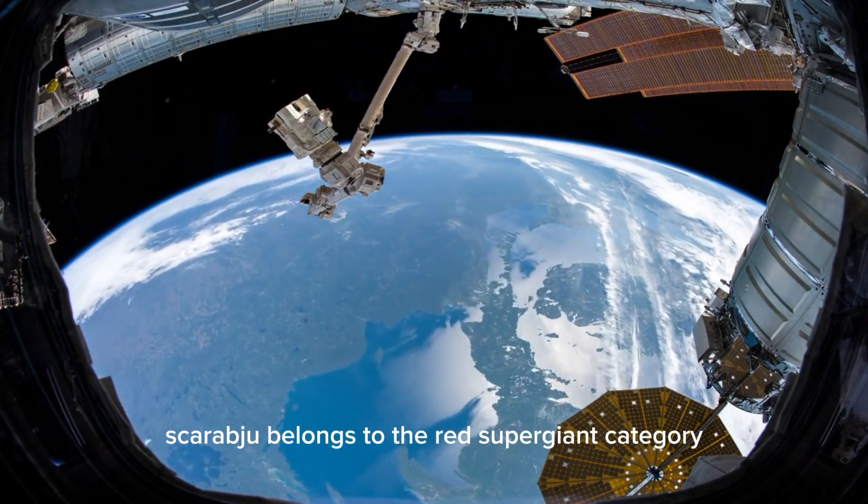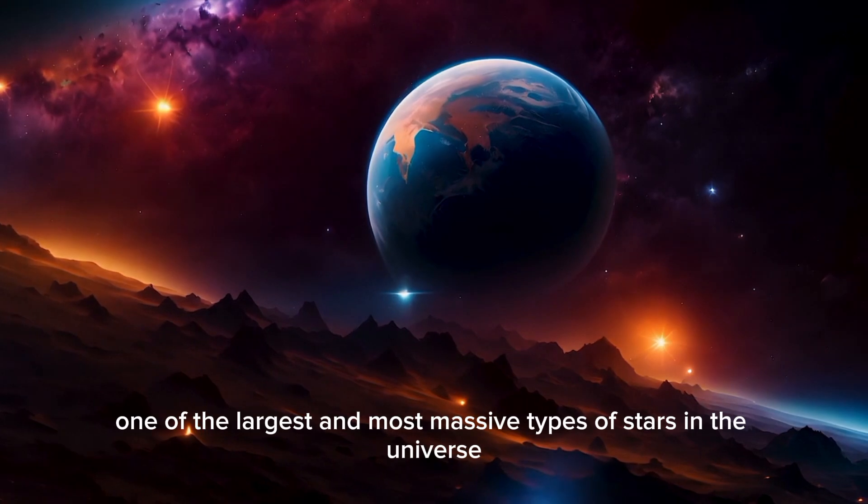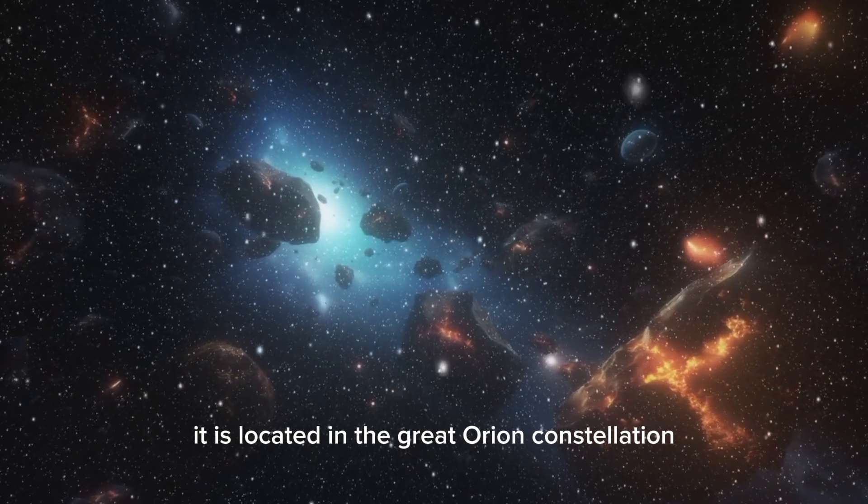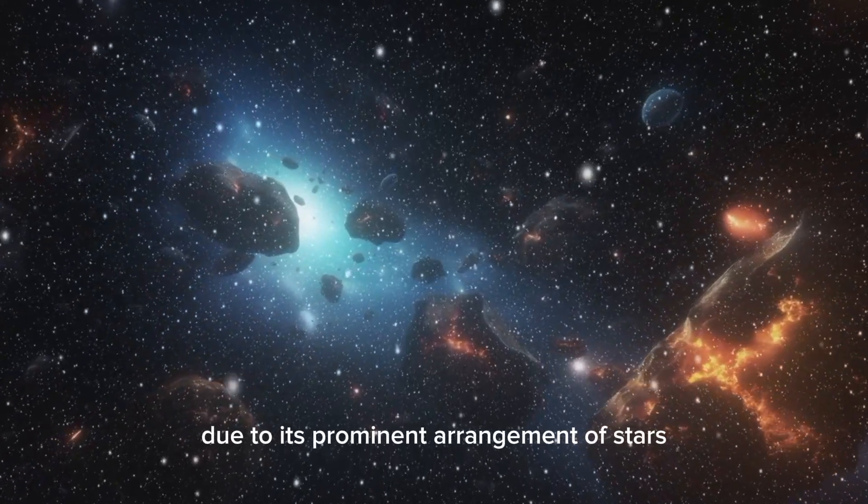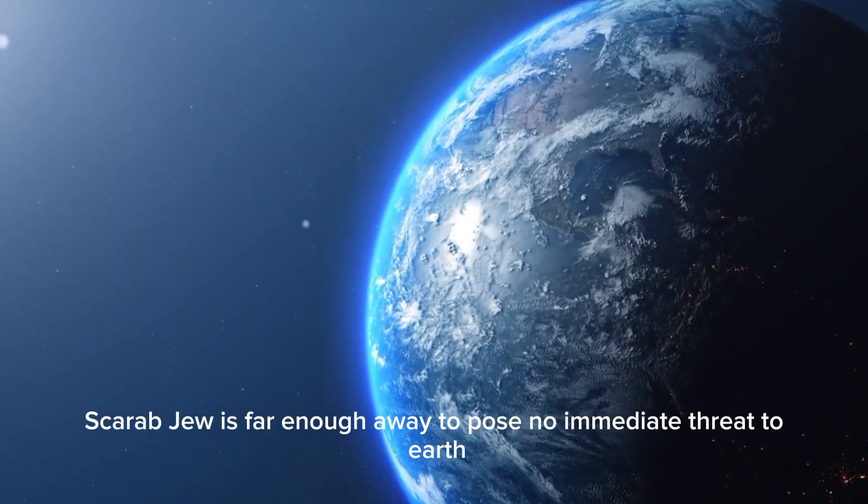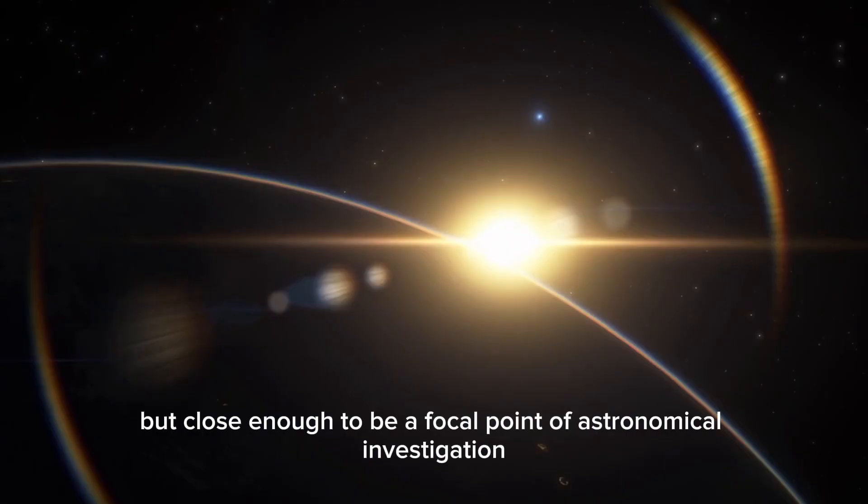Betelgeuse belongs to the Red Supergiant category, one of the largest and most massive types of stars in the universe. It is located in the Great Orion constellation, which is easily visible in the night sky due to its prominent arrangement of stars. Betelgeuse is far enough away to pose no immediate threat to Earth, but close enough to be a focal point of astronomical investigation.